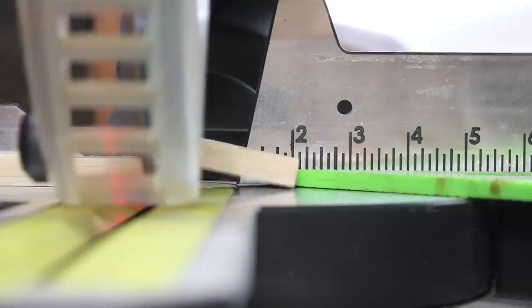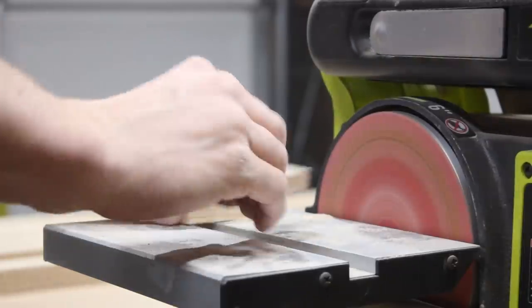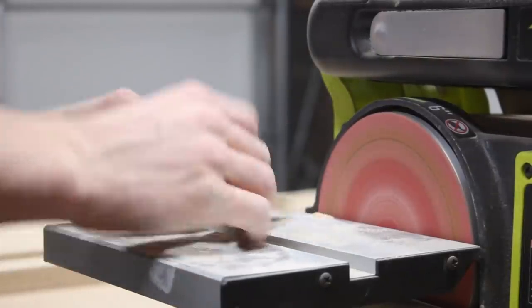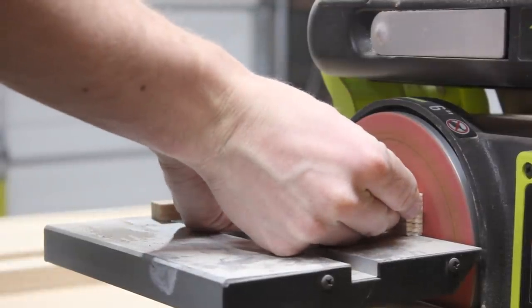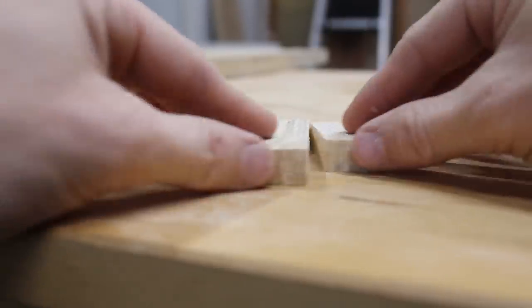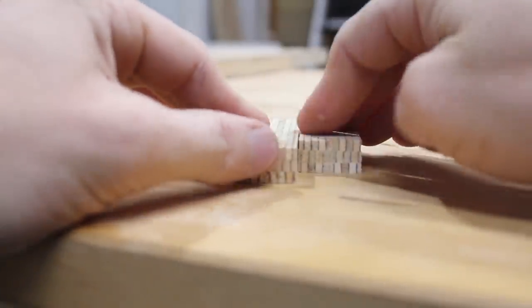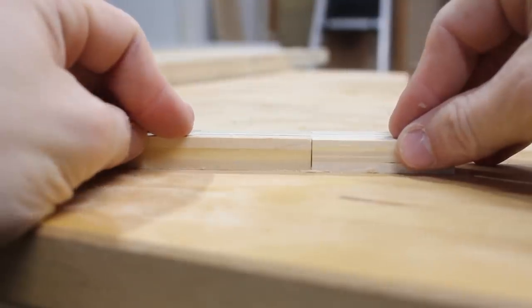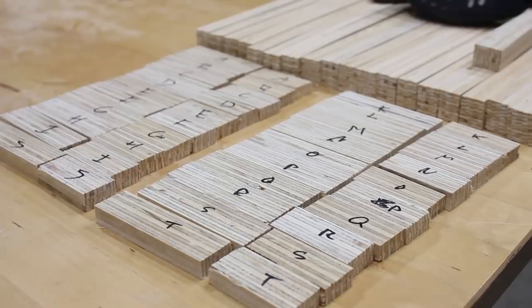Because I didn't use a drum sander to make all of these the exact same width, I needed to clean up the pieces on the disc sander so that the top and bottom spacers were all equal width. And I labeled them all to keep track of them.